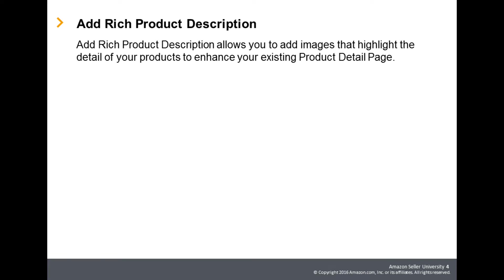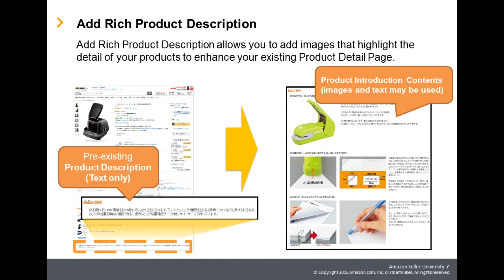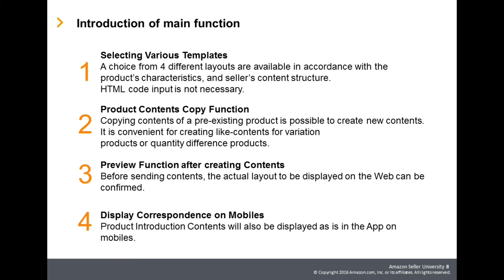Until now, in the Product Description field, only simple wording could be entered. By utilizing the Rich Product Description function, not only words but images are now possible as entry into the Product Description field. Rich Product Description has these five functions.